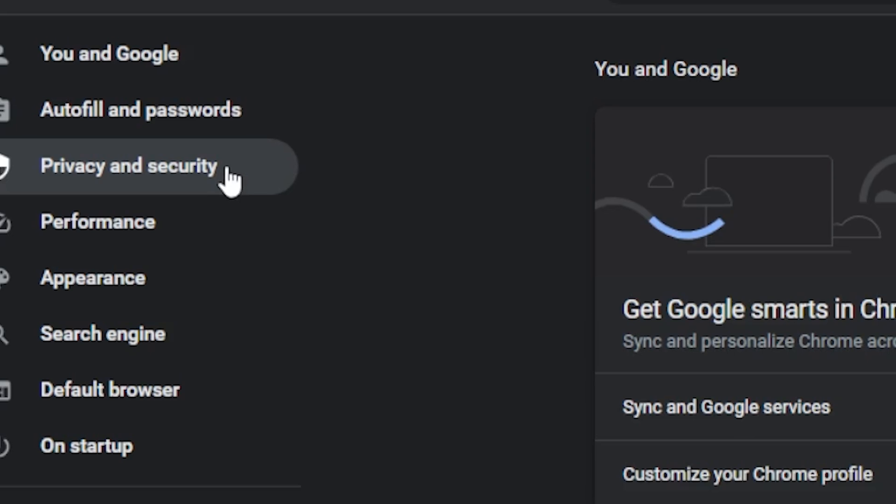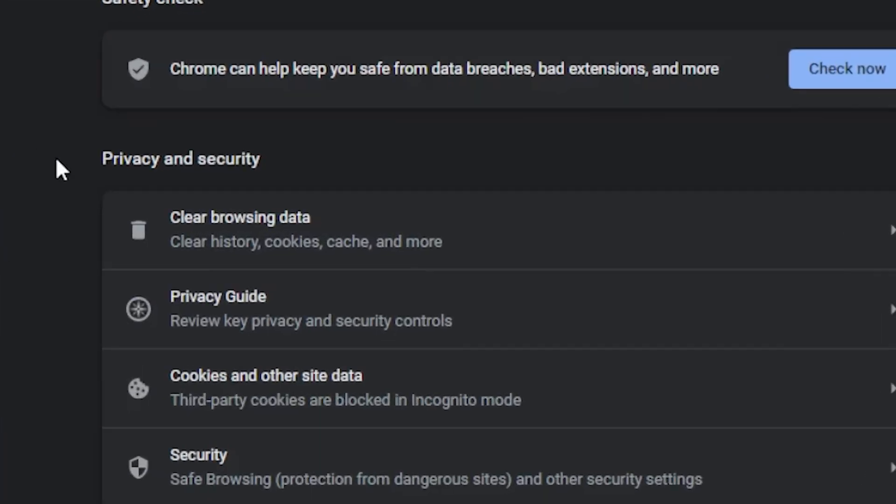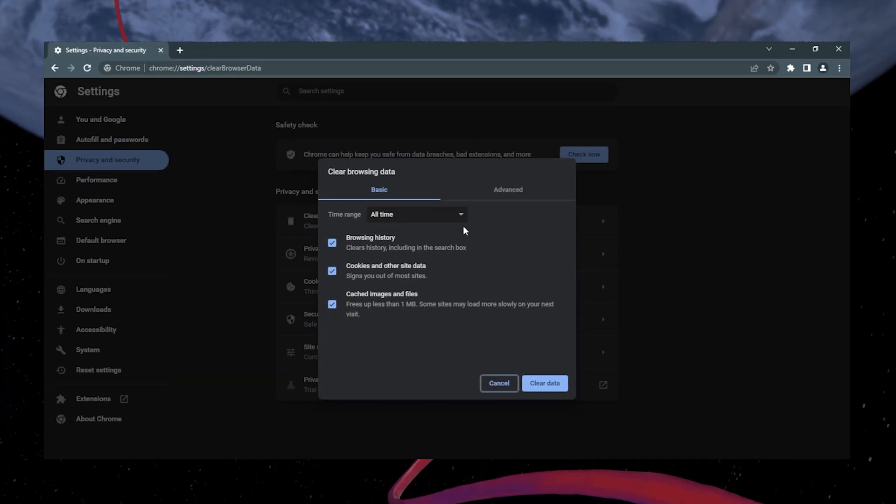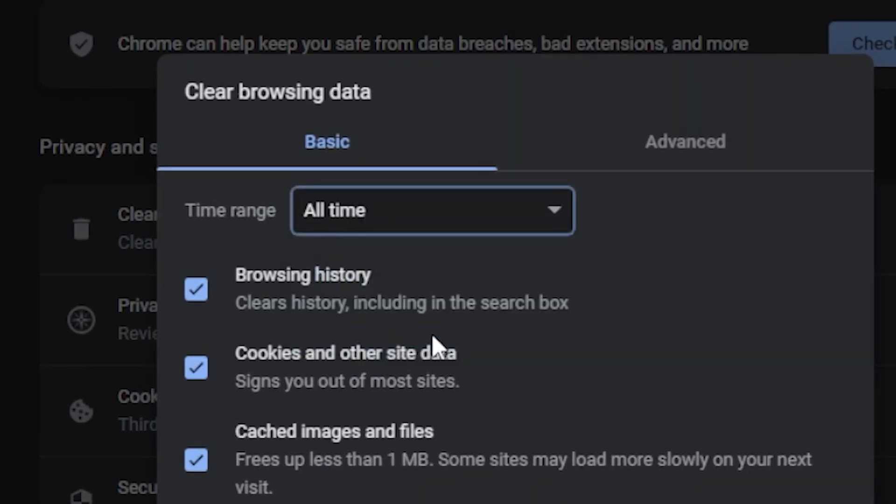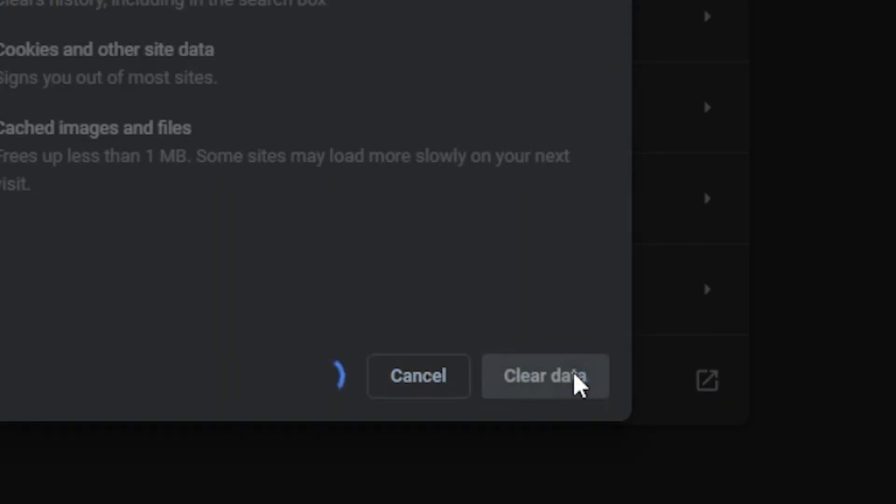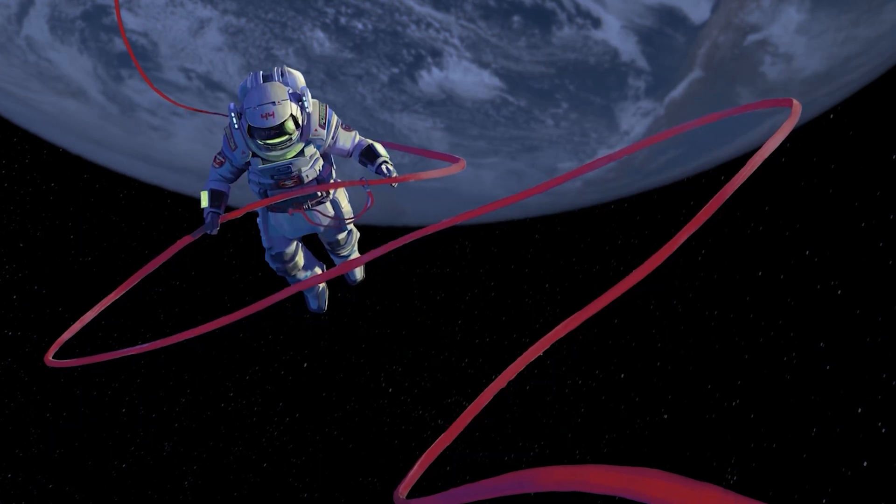Here, select the first option, Clear Browsing Data. A dialog box will open after you select this option. From this dropdown menu list, select All Time as your time range and then click on Clear Data. This will clear all your browsing data.